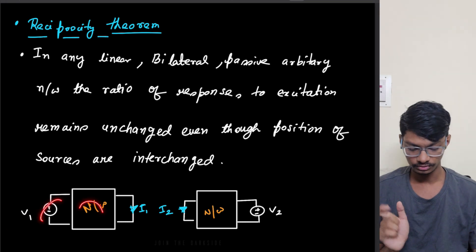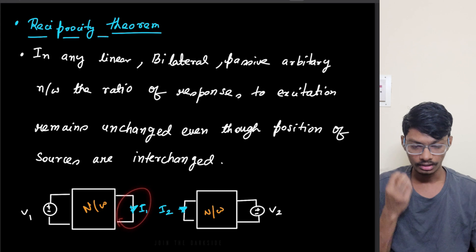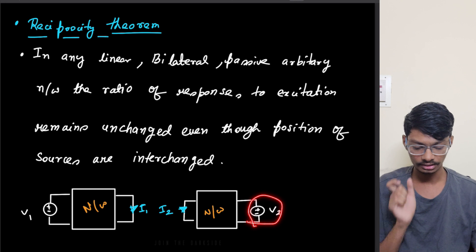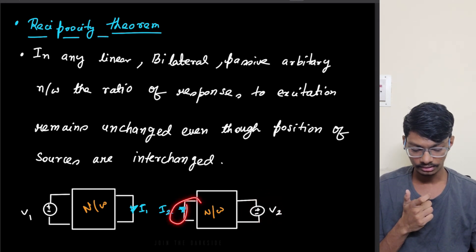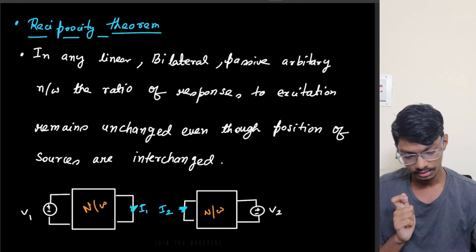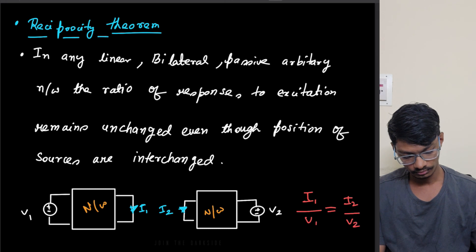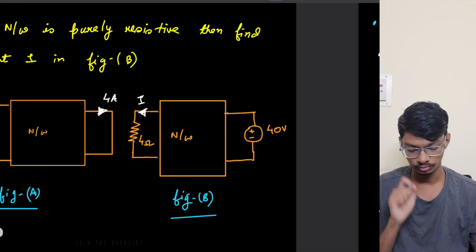If we excite this network with a voltage source, the current we get at the output is i1, which is a short circuit current. Now for the same network, if we interchange the excitation and excite the network at the other terminals, we'll get i2. The ratio of response to excitation remains the same: i1/v1 = i2/v2.